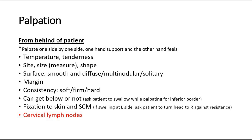Check fixation to the skin and sternocleidomastoid muscle. For a swelling on the left side of the neck, ask the patient to turn their head to the right side against the resistance of our hand pushing on the right side. This tenses the sternocleidomastoid muscle on the left side so we can feel whether the swelling is fixed to the muscle. After palpating the thyroid swelling, also palpate the cervical lymph nodes to look for lymphadenopathy.